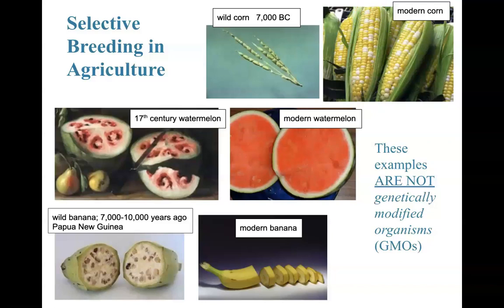Watermelon is another example. We can see the difference — not having so much edible portion, lots of seeds in that 17th century painting. Our watermelon looks very different today. This isn't a GMO; it is selectively breeding these food items. Dogs are another example of selective breeding. Horses are a beautiful example where humans have done this over time. These are not genetically modified organisms — not GMOs.